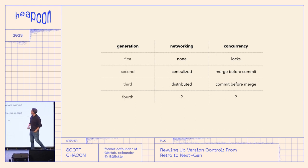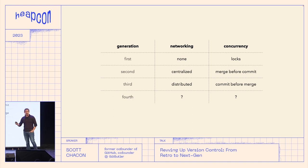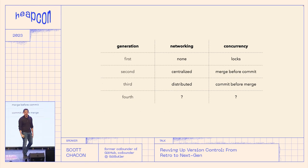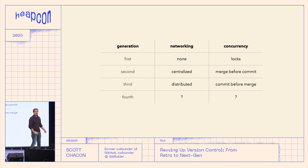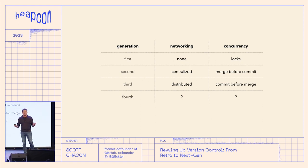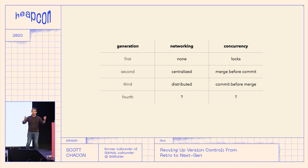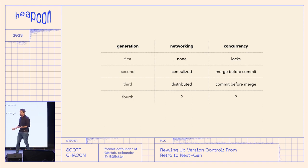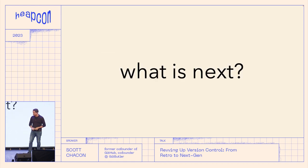These are the generations: the first generation had no networking and concurrency done with locks. You'd lock a file so somebody else couldn't edit it, which was a huge pain — if anybody's ever used Perforce and someone locks a file then goes on vacation, you're done working on that file. But if you lock files, you don't have merge conflicts. What everybody probably deals with on a weekly basis is merge conflict problems, because we're committing before merging without a centralized way to lock files or tell people what we're working on. We've given up some strengths to get others.